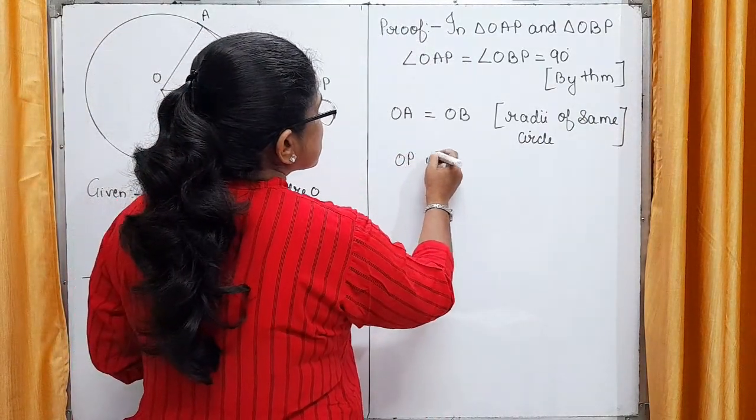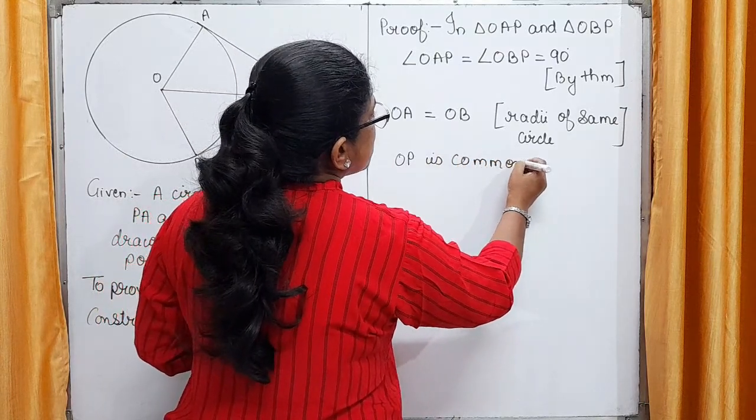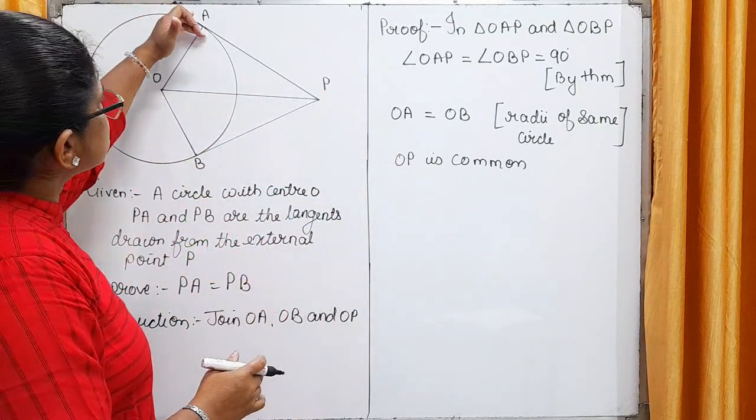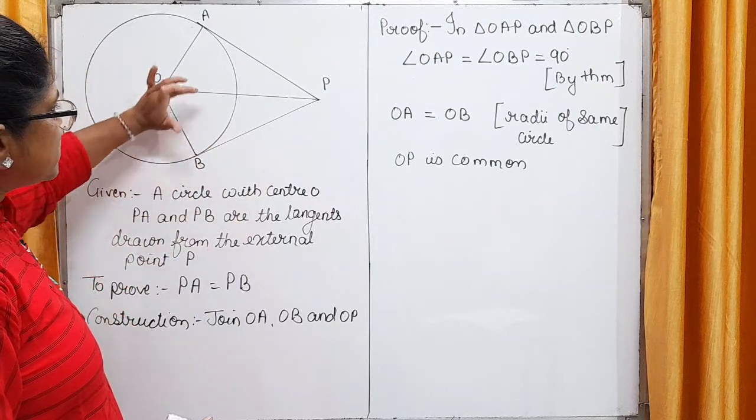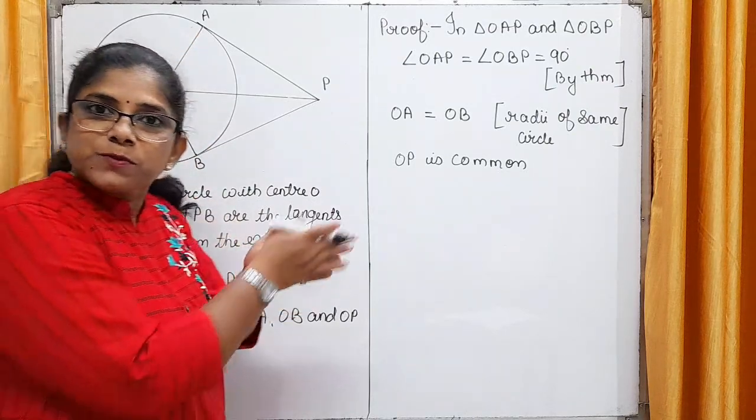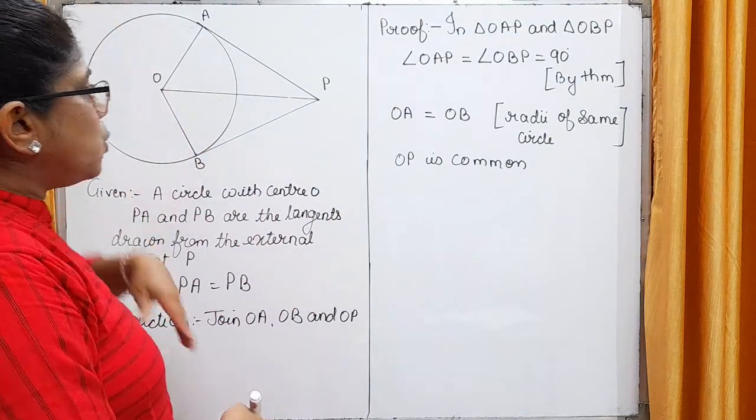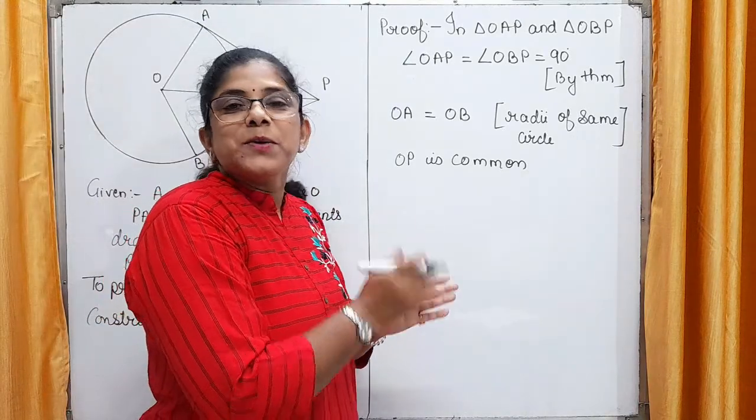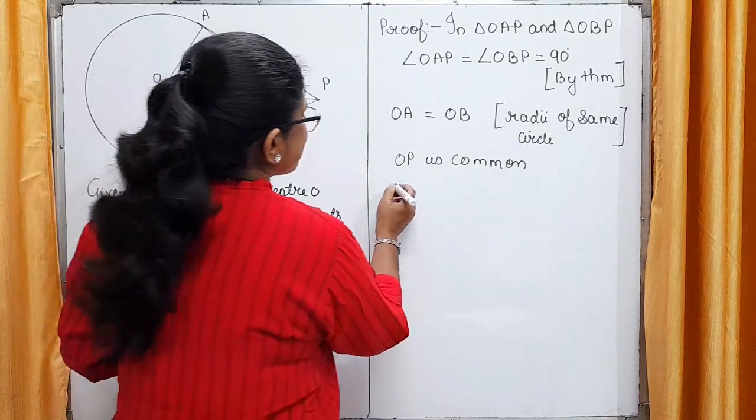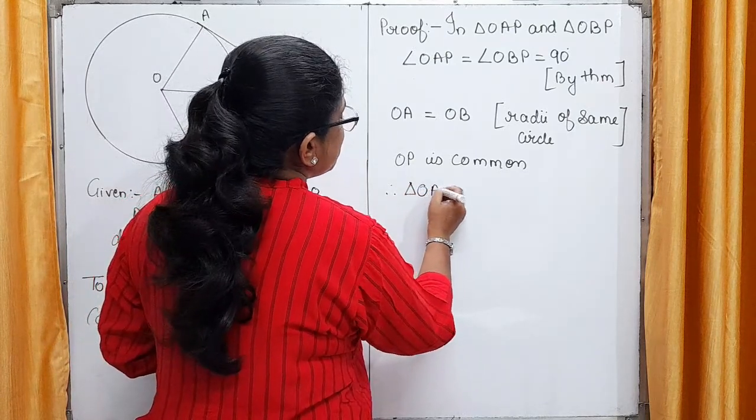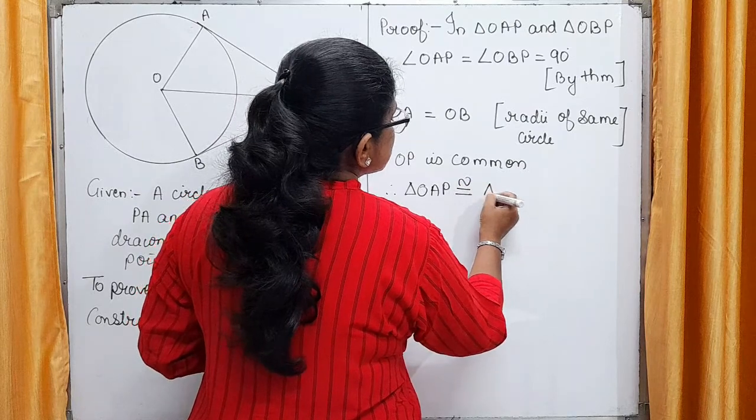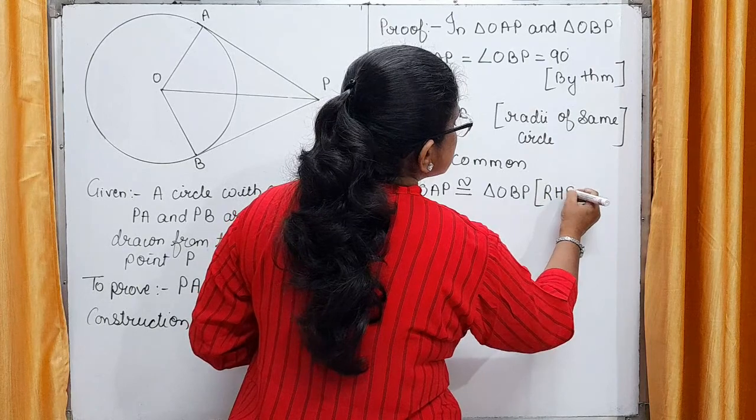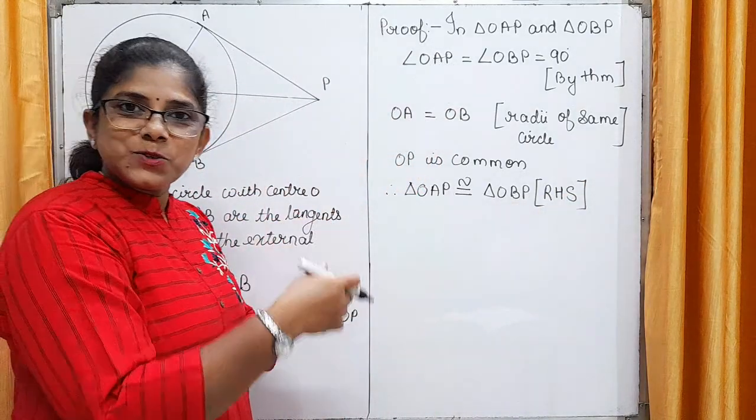Next, OP is common side for both of these triangles. Now, see what three things we have here. One angle is right angle. OP is the side which is opposite to these right angles. Means it is hypotenuse for both of these triangles. OA equal to OB means one side is equal. This means these two triangles are congruent by RHS postulate. Therefore, triangle OAP congruent to triangle OBP by RHS postulate.